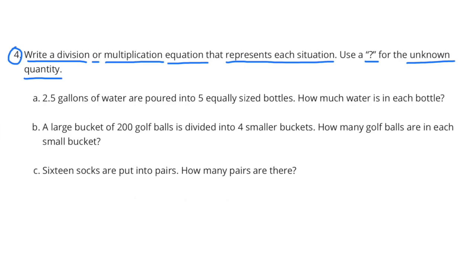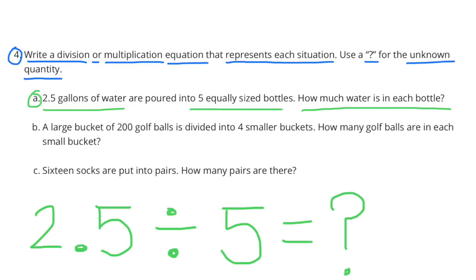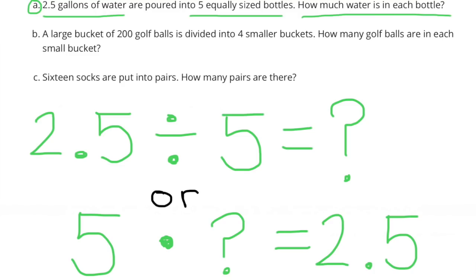Number 4. Write a division or multiplication equation that represents each situation. Use a question mark for the unknown quantity. A. 2 and 5 tenths gallons of water are poured into 5 equally sized bottles. How much water is in each bottle? 2 and 5 tenths divided by 5 equals what number? Or 5 times what number equals 2 and 5 tenths?